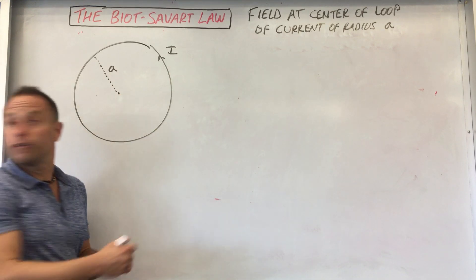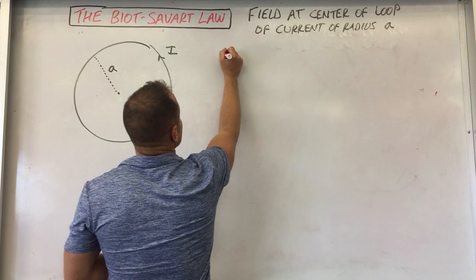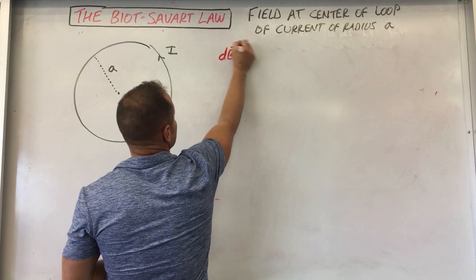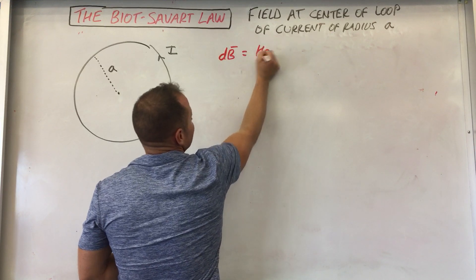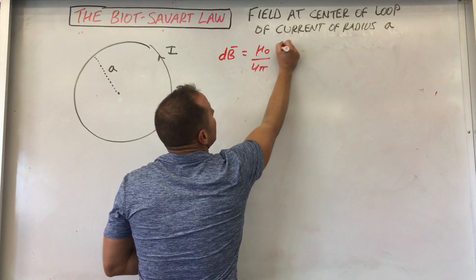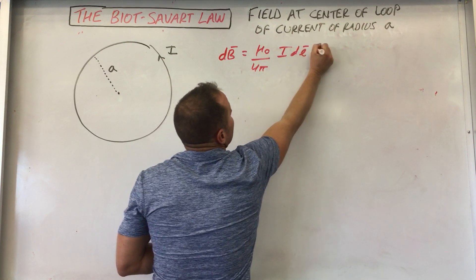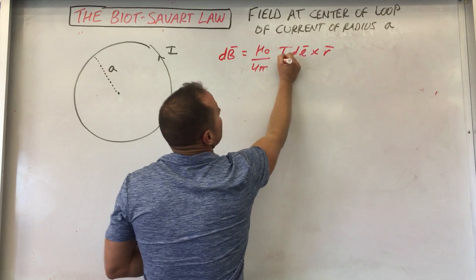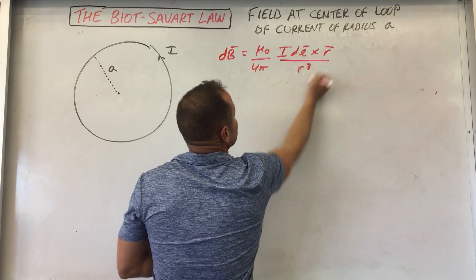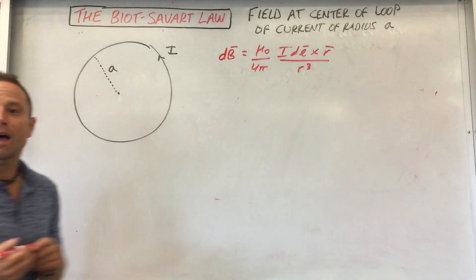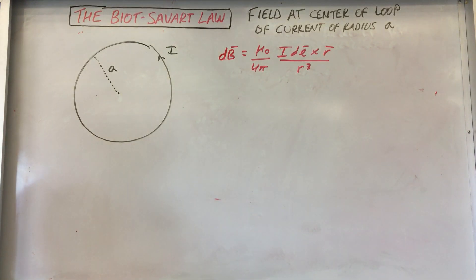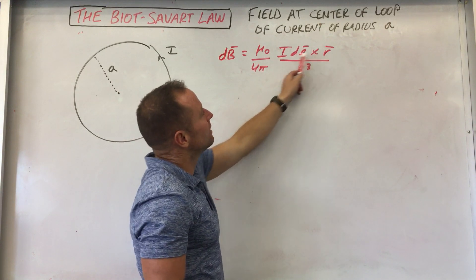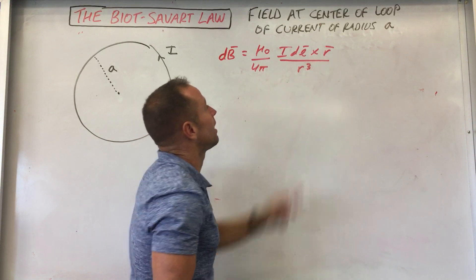And so our first move is going to be to put down the Biot-Savart law. So just take a deep breath and put it down. Mu knot over 4 pi, IdL cross R vector all over R cubed. And again, my advice with using this is to actually add in some detail in the picture to identify what the individual bits actually are.